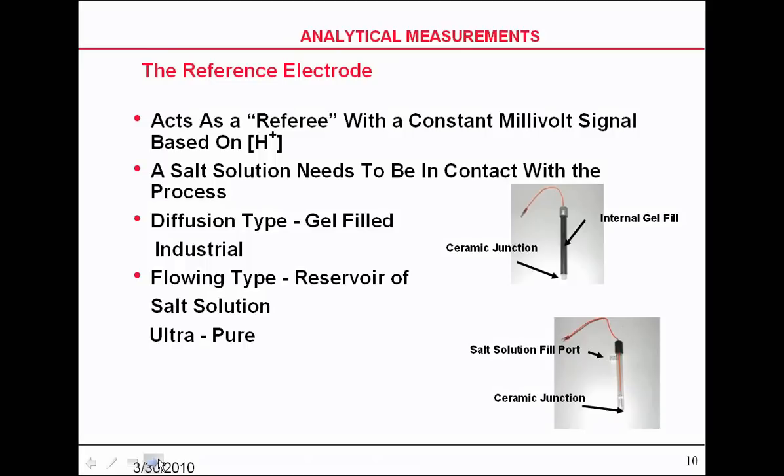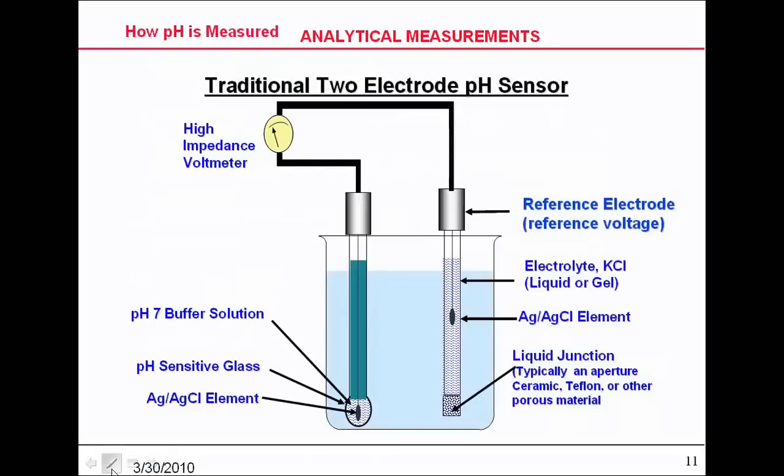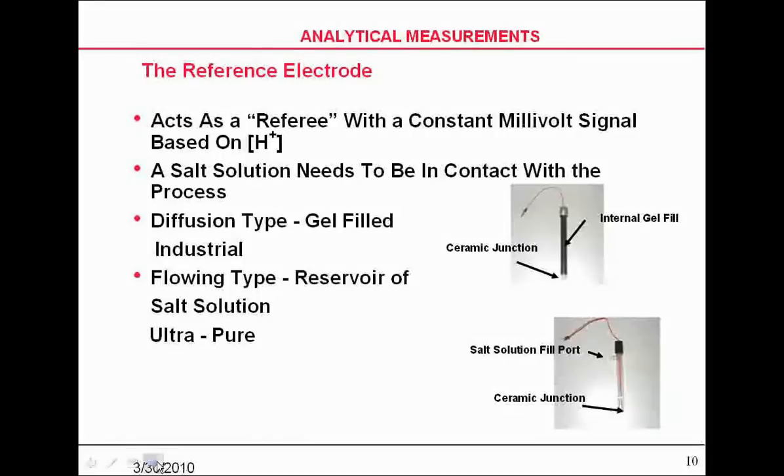When we're talking about the ultra-pure, which is the electrode on the bottom, we like to use the flowing type, and in that case, it's a one-mole type KCl. There are industrial types for process, and it's good to know that you basically use two different reference solutions for two different applications.